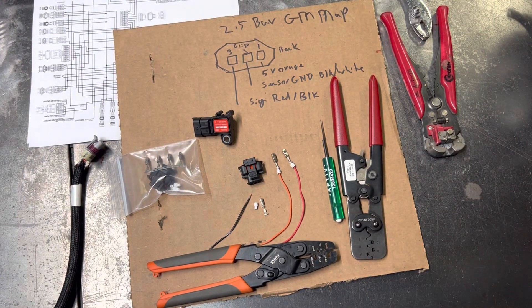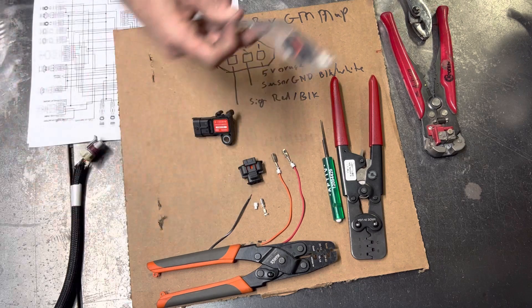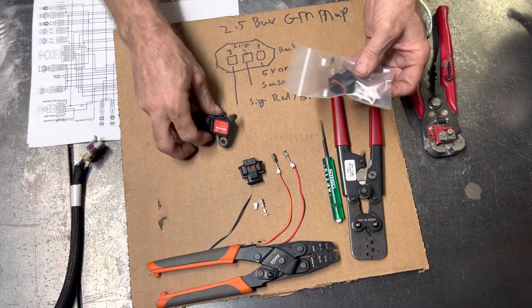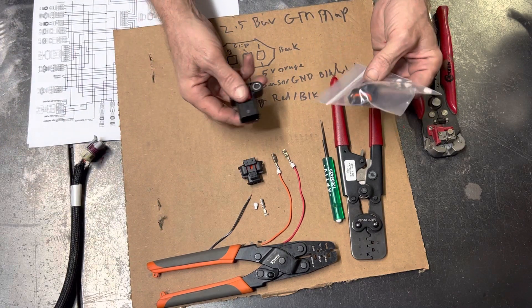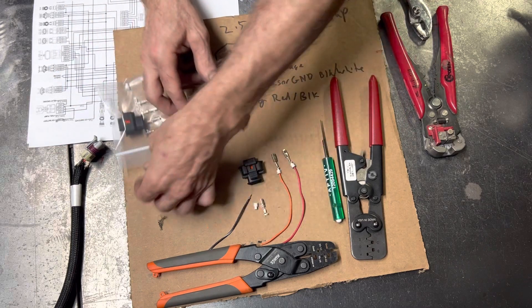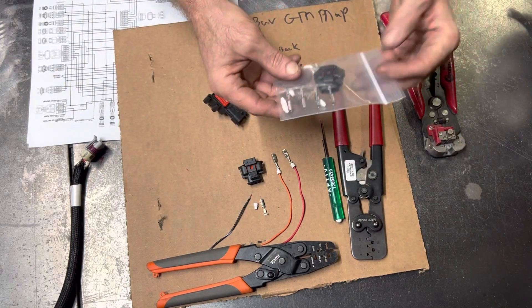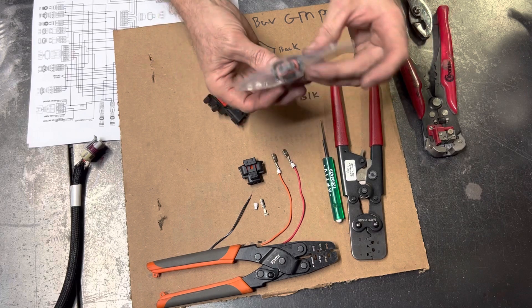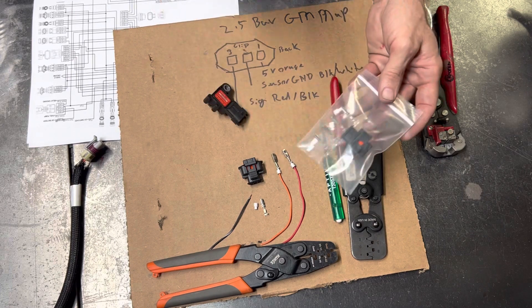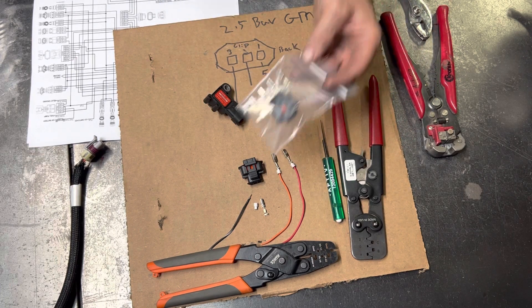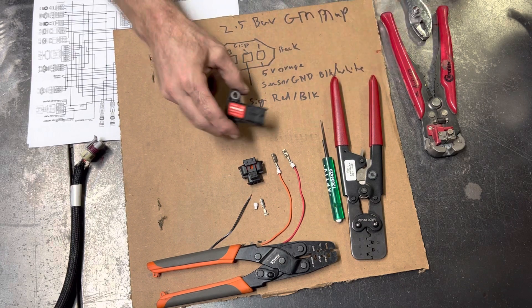Alright everybody, I want to show you our Bosch-style MAP connector. It goes right here. I picked these kits up for like 10 bucks. It comes with the pins, an extra pin, seals, the actual plug - it's weatherproof, all that good stuff.